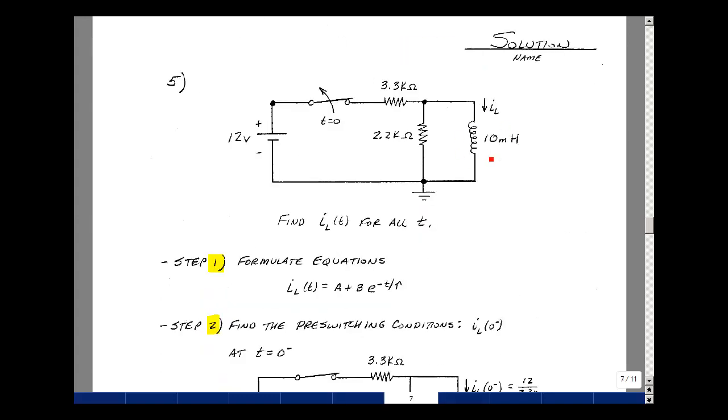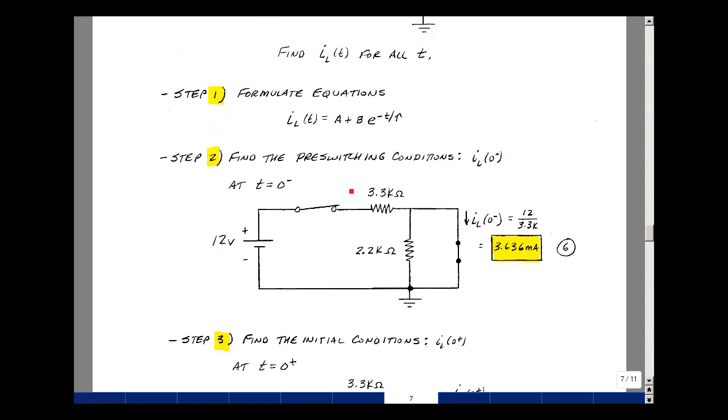Problem number five is a one-inductor circuit with a single-pole, single-throw switch that opens at t equals zero. We're asked to solve for the current I sub L of t for all time. We'll use our six-step algorithm from Chapter 7 notes. First step is to formulate the equations. We have a first-order differential equation, so it'll be some a plus b times e to the minus t over tau. Step two is to find the pre-switching conditions of our variable, I sub L. The switch has been in this position for a long time. It's going to open at t equals zero, but let's assume we reach steady state. That means the inductor is a short circuit. That's going to force all of the 12 volts across here. So the current in this resistor would be 12 volts divided by 3.3k, but there's no current going into this resistor because there's no voltage across it. So all that current goes into here. So that's 3.636 milliamps. This is worth six points, no partial credit.